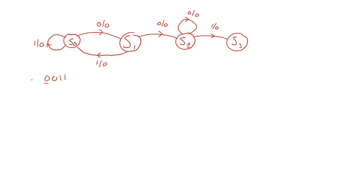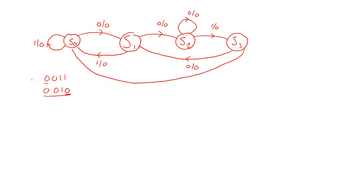Now in state S3: if we receive a zero, it means we are breaking the sequence. For example, we got zero zero one zero, so we didn't find the full sequence but we found the first zero we're looking for. We go back to state S1 and output a zero. On the other hand, if we are in state S3 and observe a one, it means we go back to state S0, but we have found what we were looking for — so we output a one. This concludes the state transition graph for this problem.